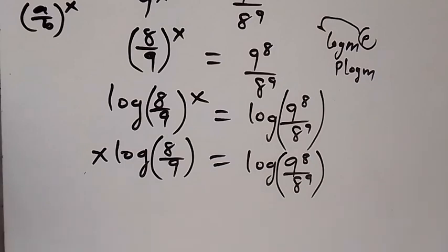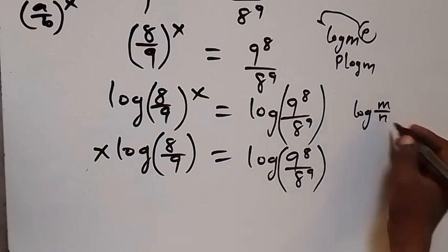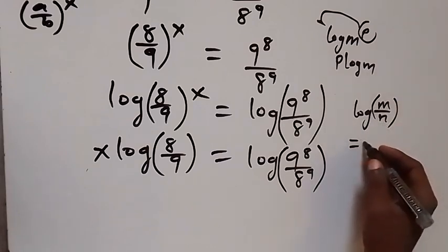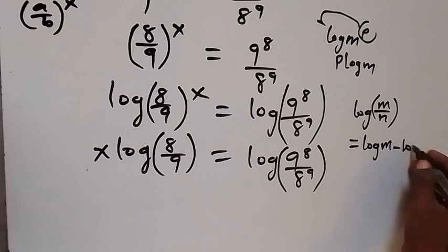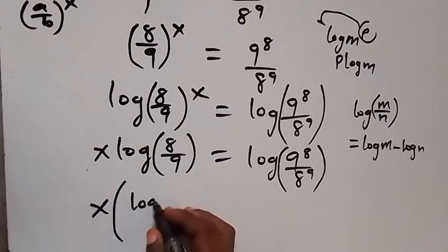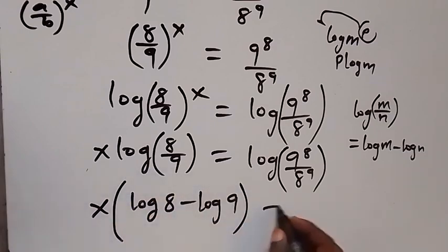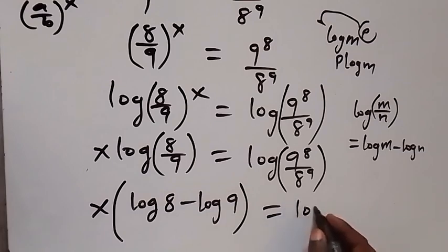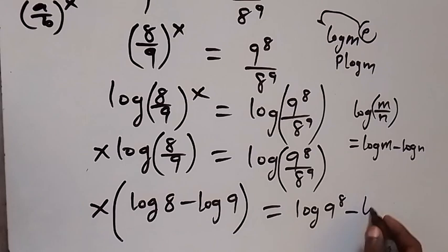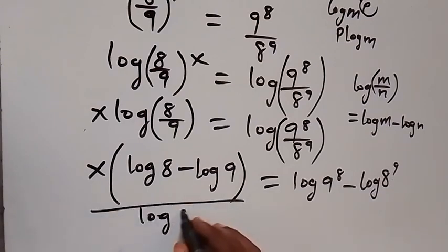From here we can also apply the law of logarithms to separate: when we have log m over n, we can write it as log m minus log n. So applying that here, this will become x times bracket log 8 minus log 9. And on the right side we can separate it as well and we have log 9 raised to power 8 minus log 8 raised to power 9. Since we are finding the value of x, we divide both sides by log 8 minus log 9.